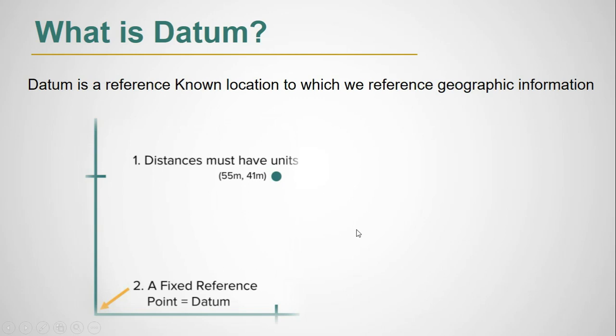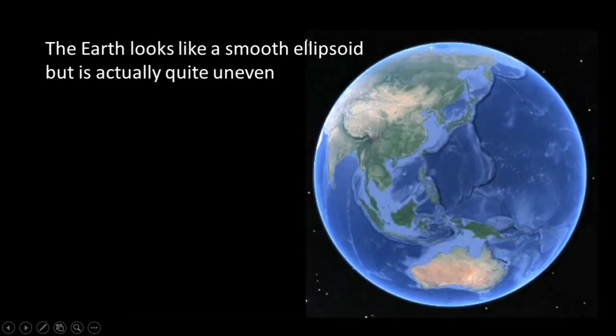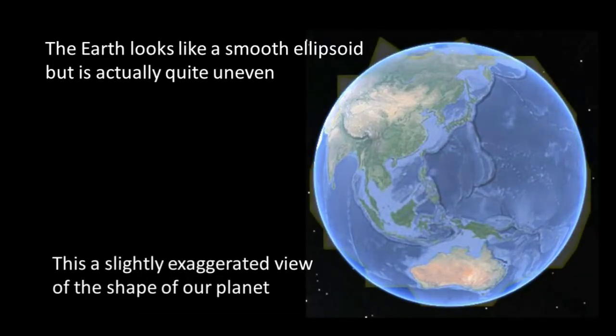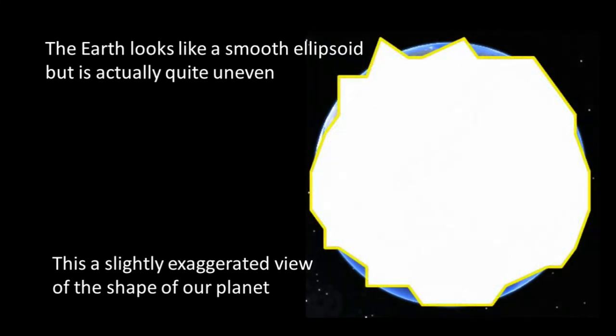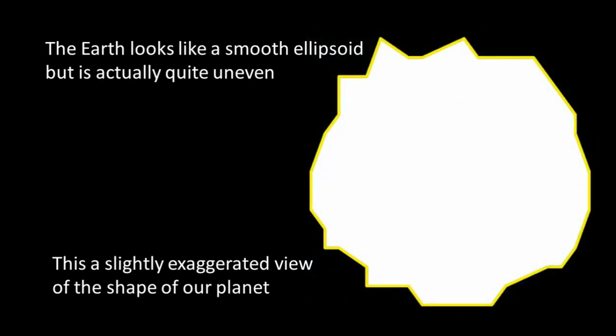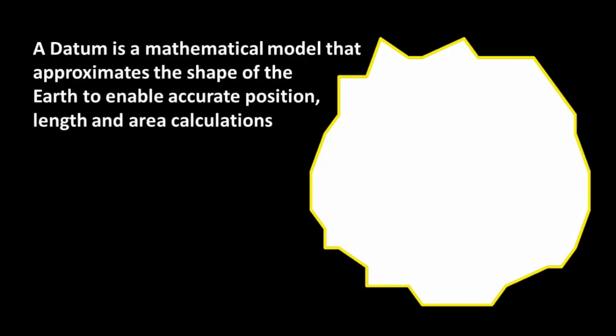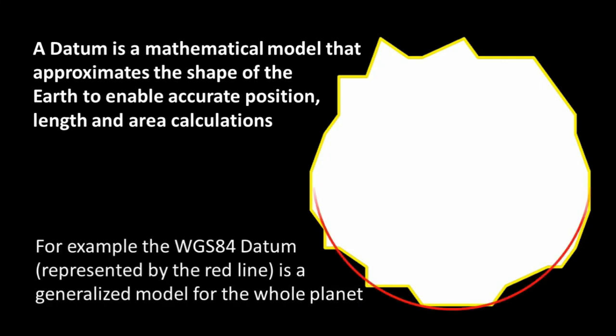Now we will know datum through a video. The Earth looks like a smooth ellipsoid but it is actually quite uneven. This is a slightly exaggerated view of the shape of our planet. A datum is a mathematical model that approximates the shape of the Earth to enable accurate position, length, and area calculations.